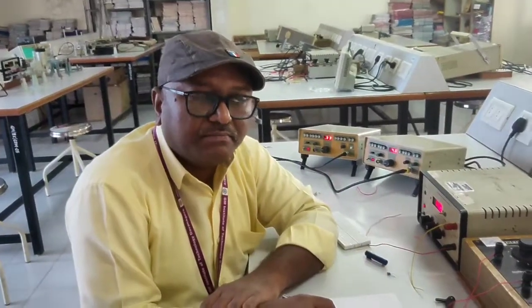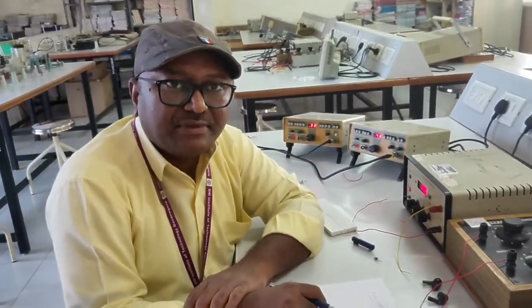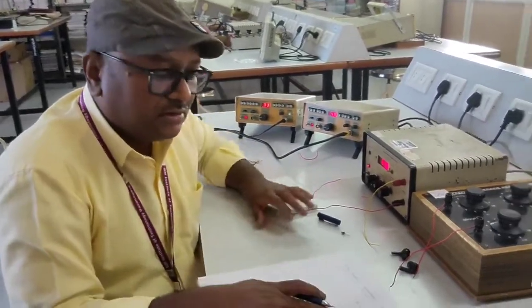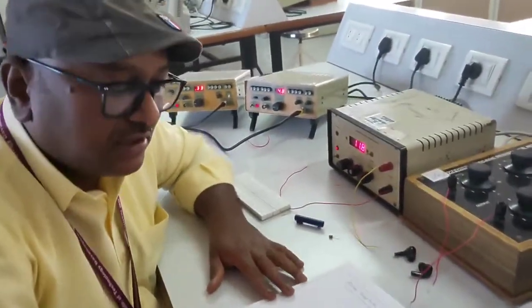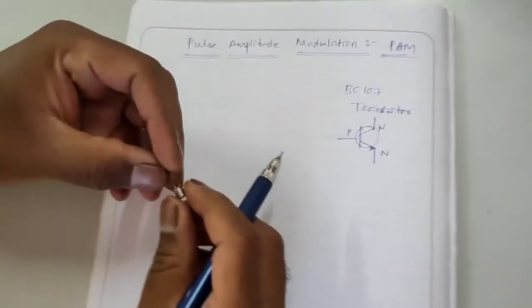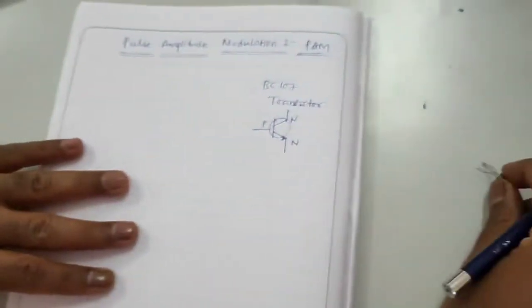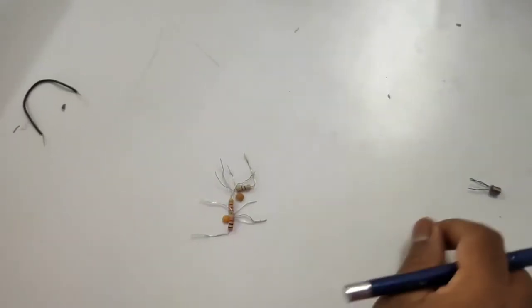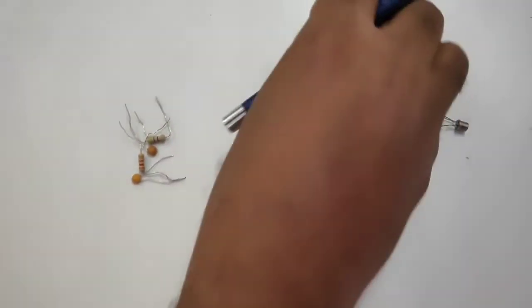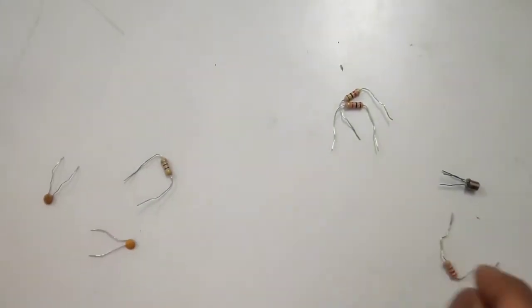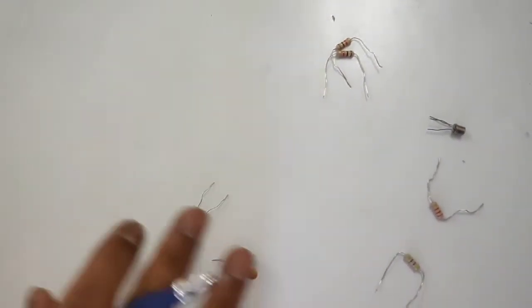I am going to show you the experiment PAM - Pulse Amplitude Modulation and demodulation. First I will write the circuit diagram. These are the components required for this experiment: BC107 NPN Transistor and the resistors we require - 1 Kilo Ohm, 2.2K, 470 Ohm - and 2 capacitors of 0.1 microfarad.